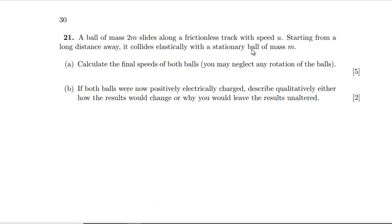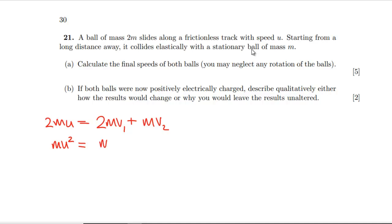Question 21: a ball of mass 2m slides along a frictionless track at speed u and collides elastically with a stationary ball of mass m. We apply conservation of momentum and conservation of energy. Momentum: 2mu = 2m·v₁ + m·v₂. Energy: m·u² = m·v₁² + half·m·v₂², cancelling the m's to get 2u = 2v₁ + v₂.